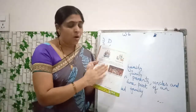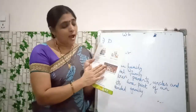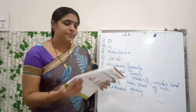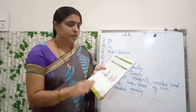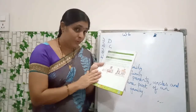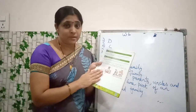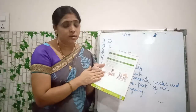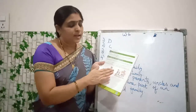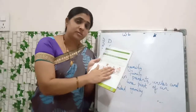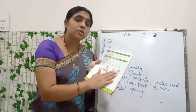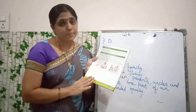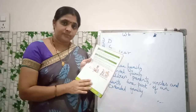During festivals, all the family members meet together and enjoy. Next, what is this? I told you lastly — pets, pet animals. Yes, these are the pet animals: dog, cat and all are here. Pets are also a part of the family member.